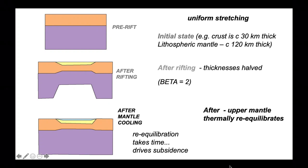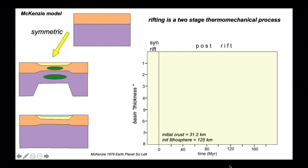Let's apply this under our basin. We've re-equilibrated our upper mantle to create a more uniform lithospheric thickness, and that's driven subsidence under our initial rift basin. The McKenzie model recognizes that rifting is a two-stage thermomechanical process with initial stretching followed by thermal re-equilibration.